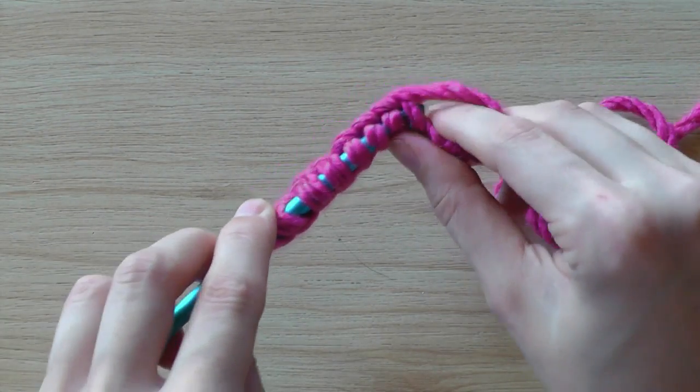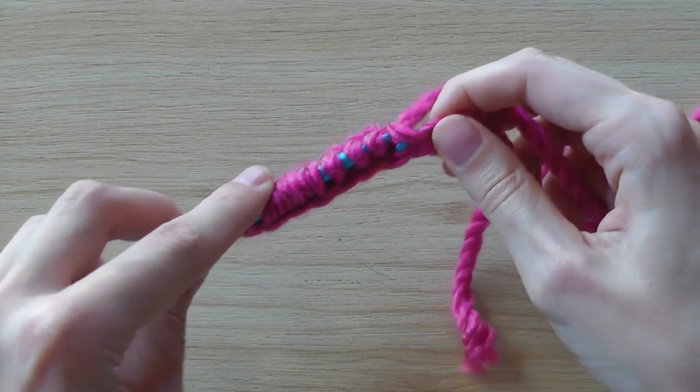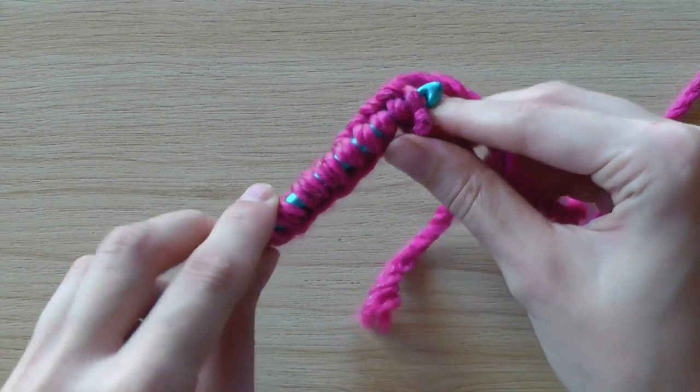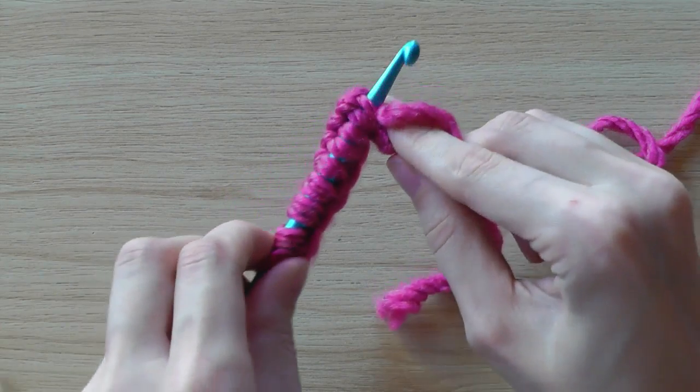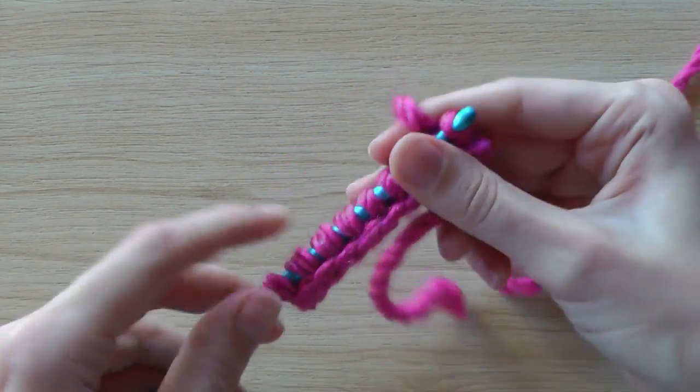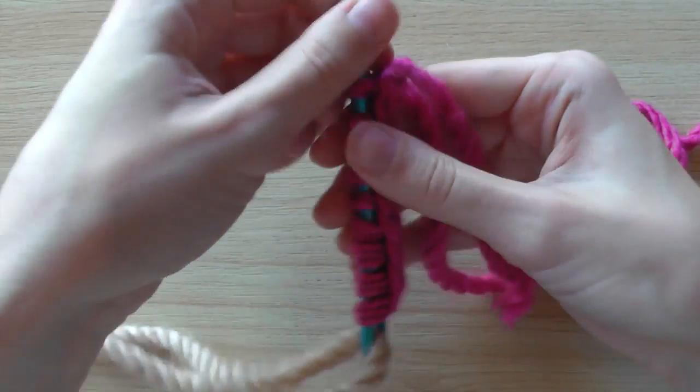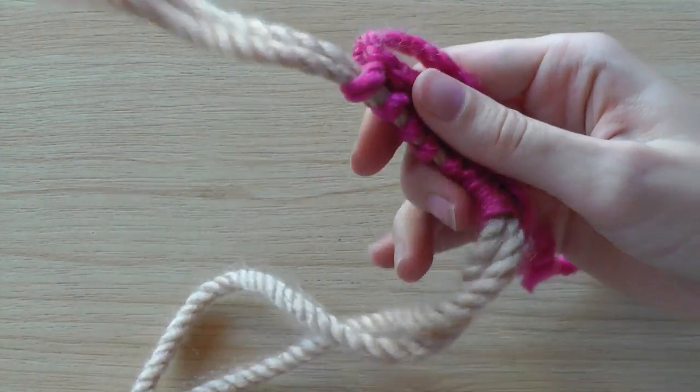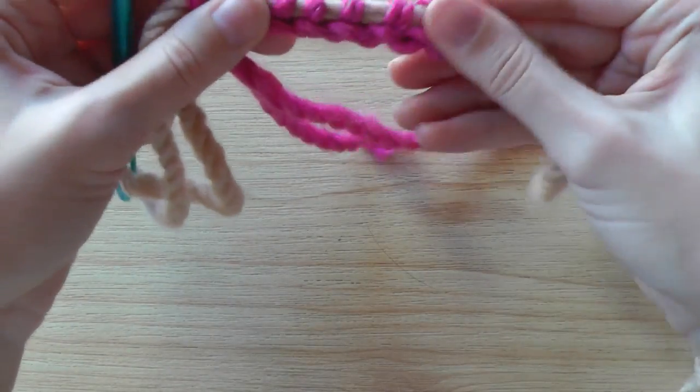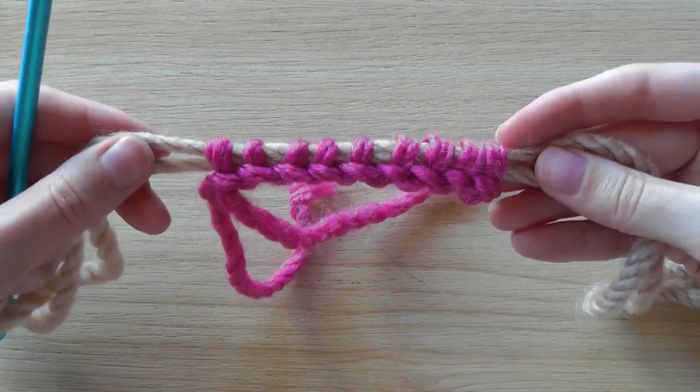And these are the two ways how to cast on. And if you have all your stitches, you pull through the strand. And this is your cast on.